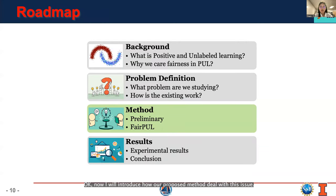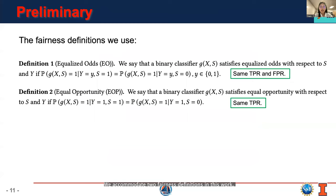Okay, now I will introduce how our proposed methods deal with this issue. We accommodated two fairness definitions in this work. The first is equalized odds, short as EO. We say that a binary classifier g(X,S) is defined as satisfying equalized odds with respect to S and Y, if both the true positive rates and false positive rates are the same across different sensitive groups.